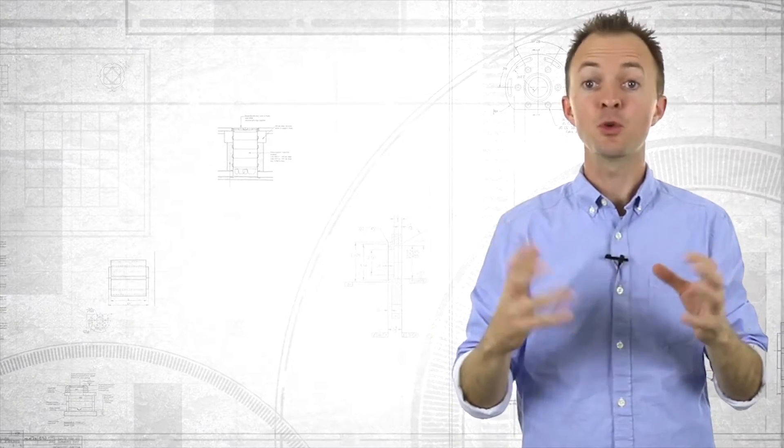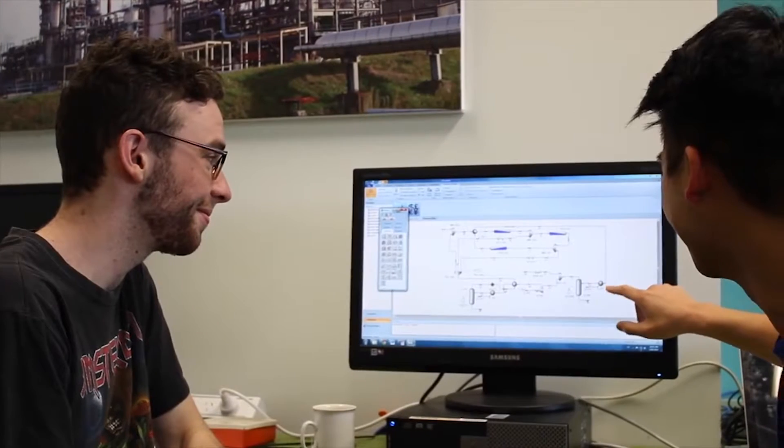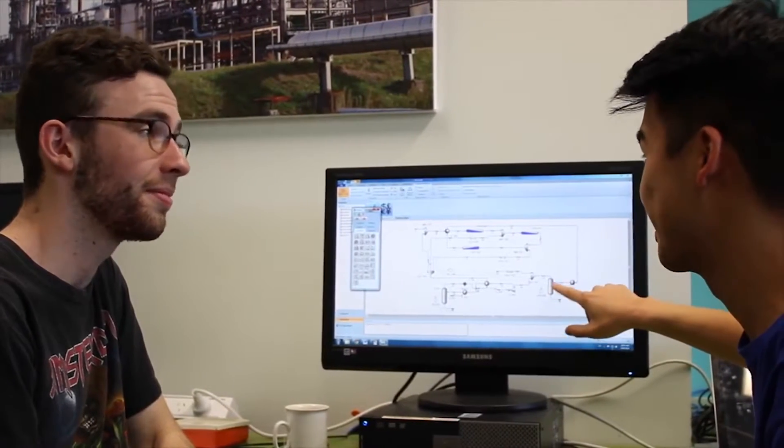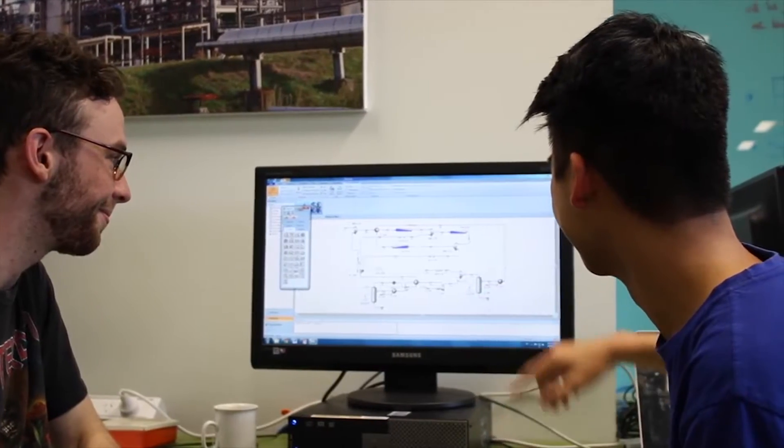When you study chemical engineering you'll study units in three broad categories. The first one I like to call is the foundations. These are the really critical enabling subjects that allow us to build on and learn about chemical engineering and that includes maths, chemistry, and fluid mechanics or how the fluids flow.